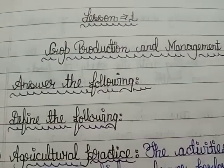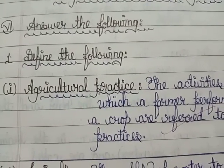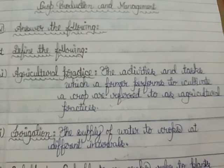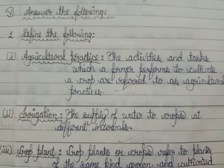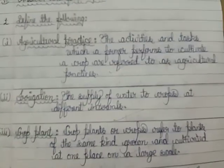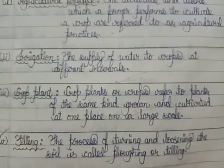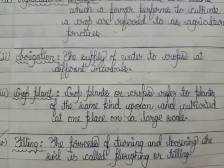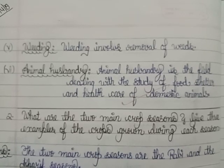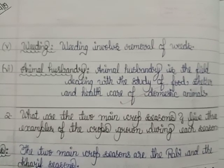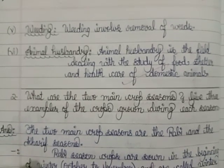This is the first question: 'Answer the following.' The first part is to define the following terms. The first definition is agricultural practice, the second is irrigation, the third is crop plant, the fourth is tilling, the fifth is weeding, and the sixth is animal husbandry. These are the different definitions for question one.